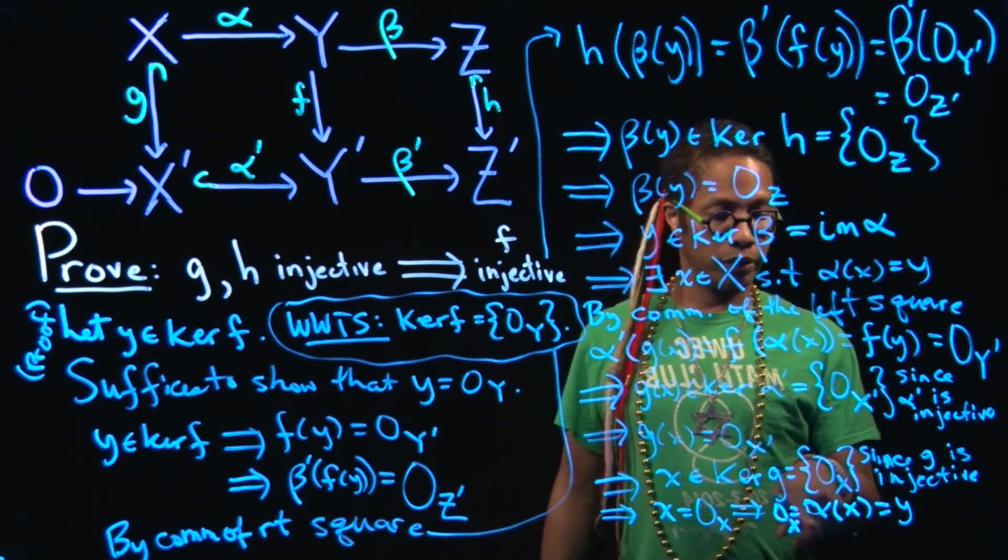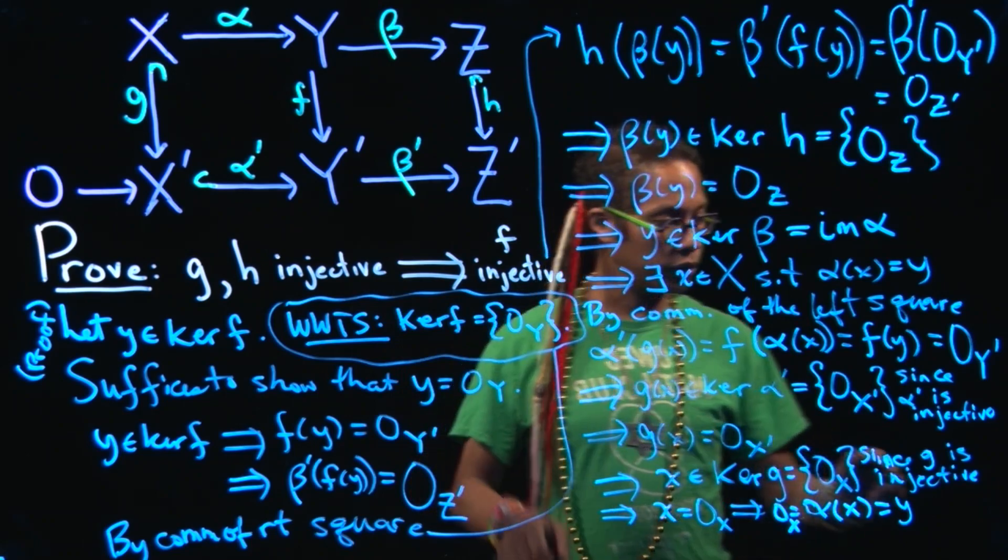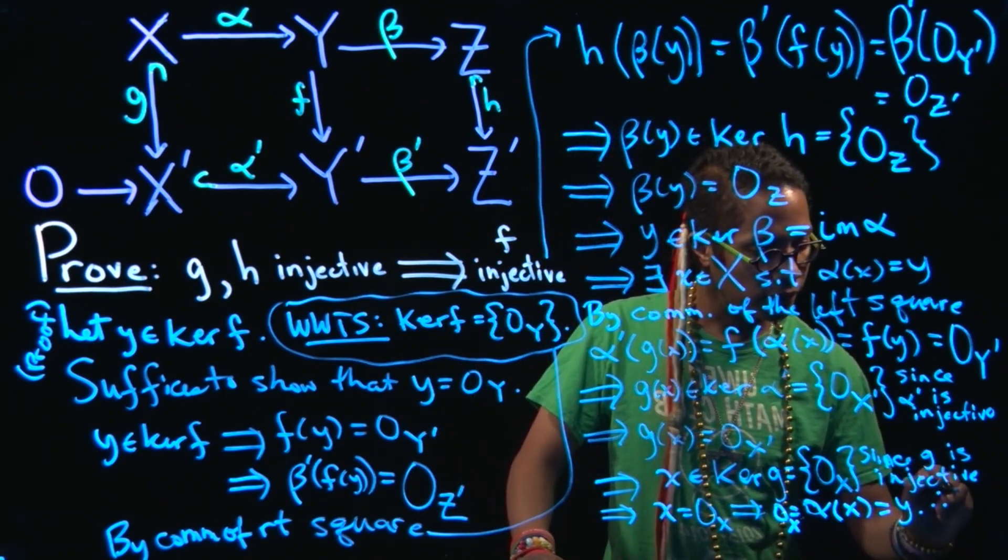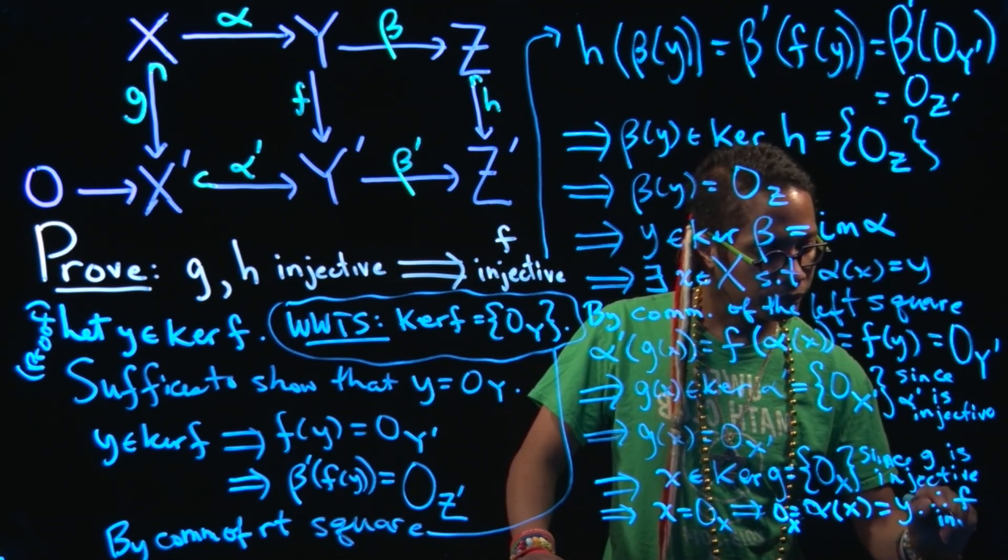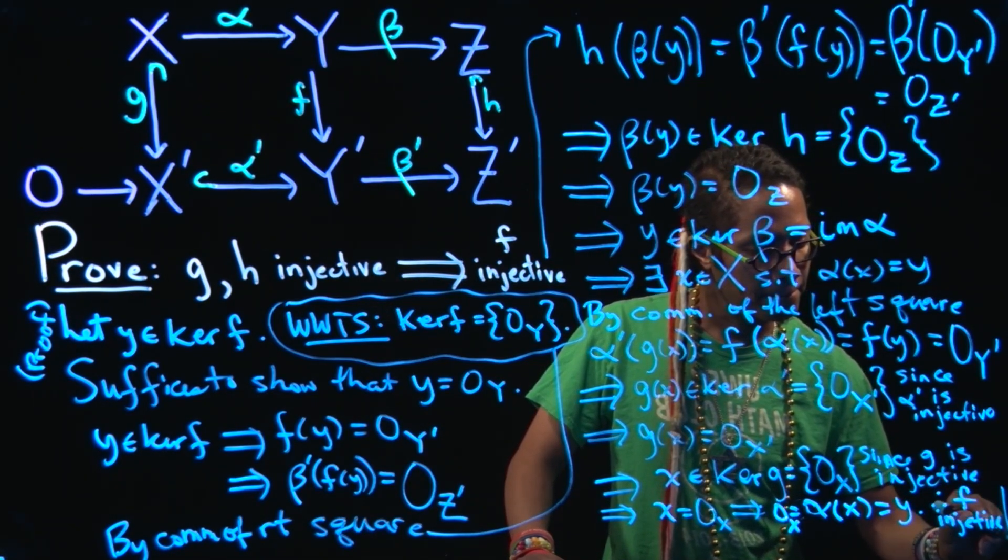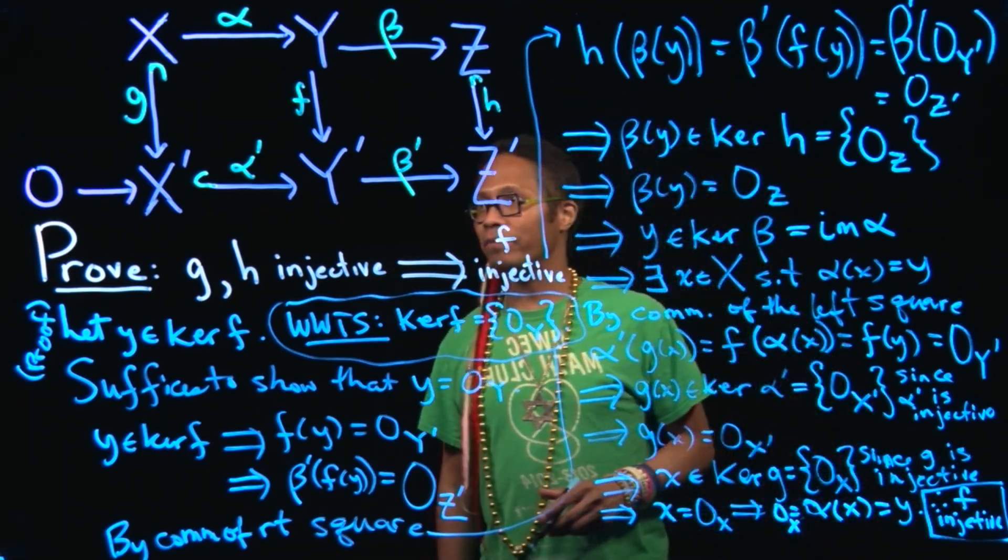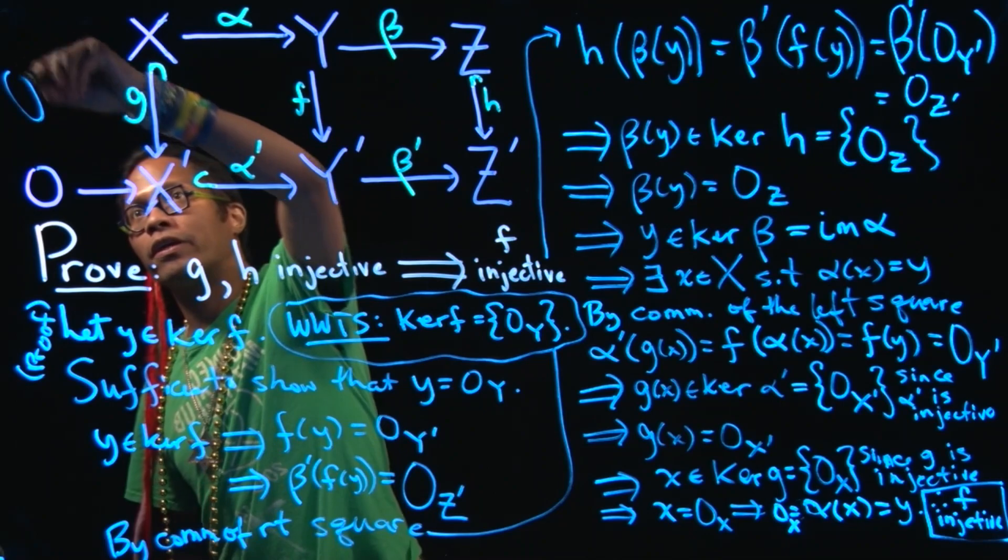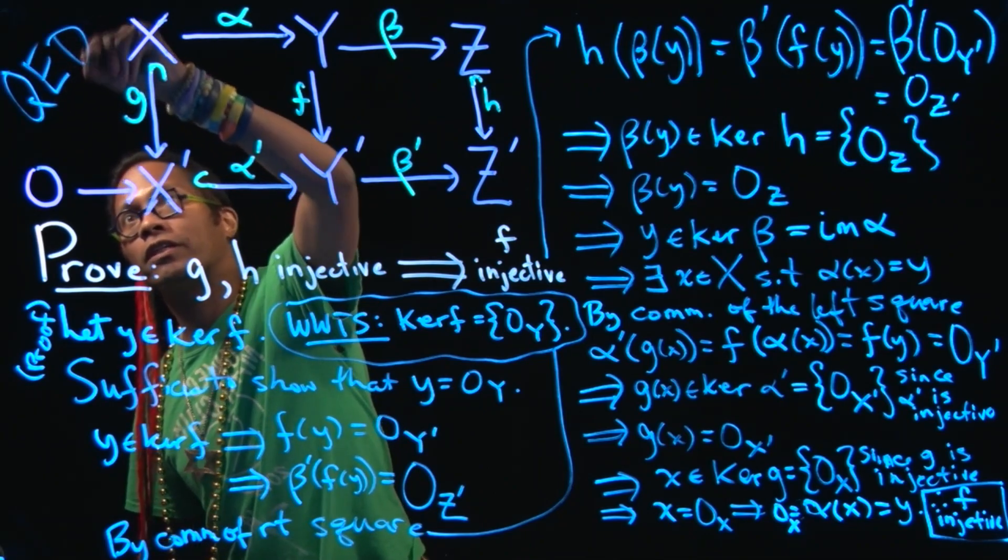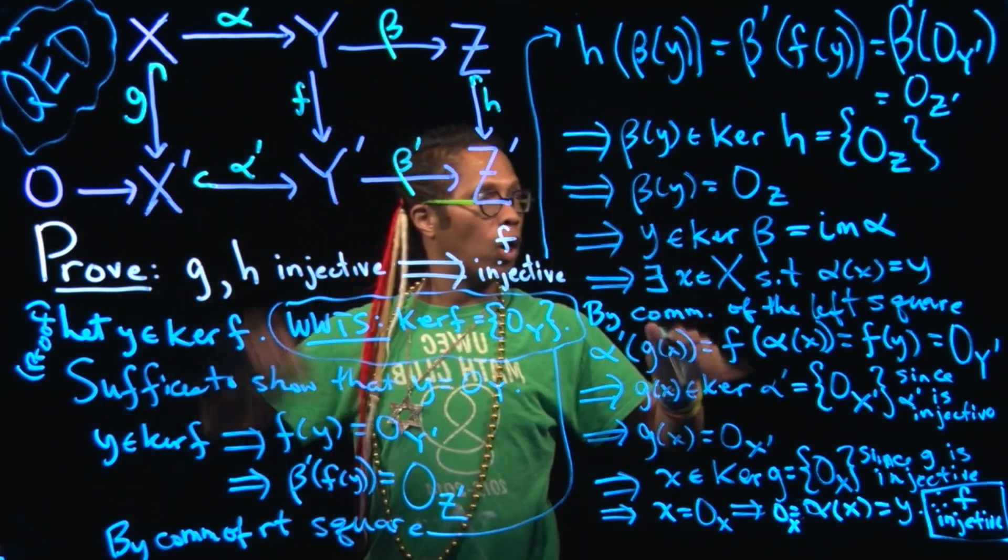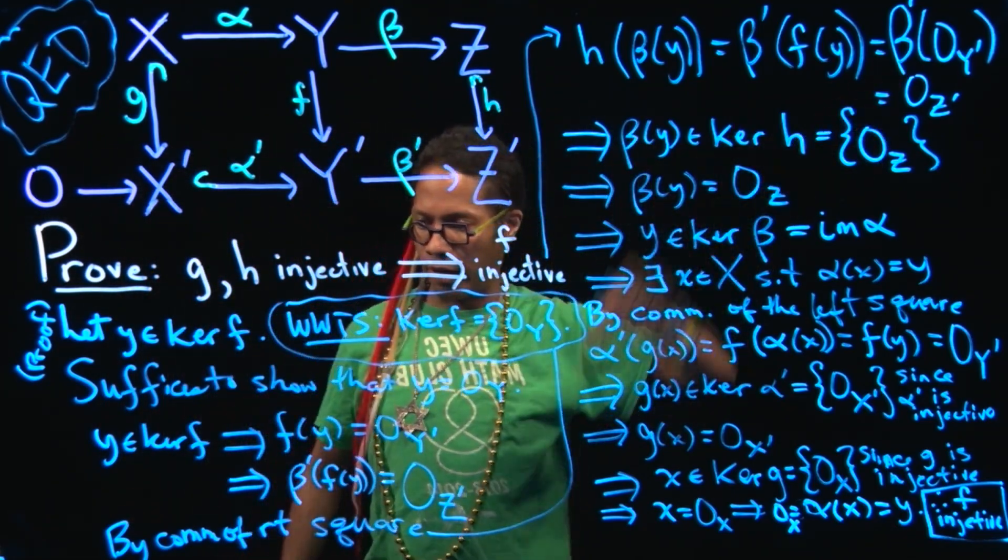So Y is equal to 0 sub X. So the kernel is trivial. So in this little bit of space I have left, F is injective. There is very little space here. So I'll just write my QED up here. Yeah. We did it. Woo. Oh boy.